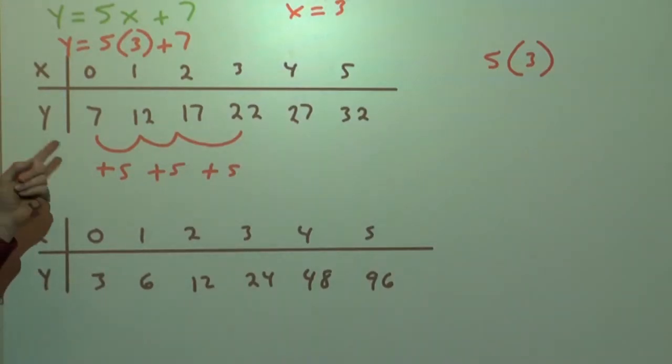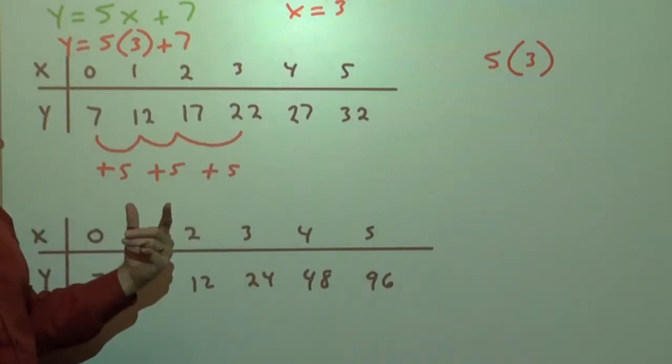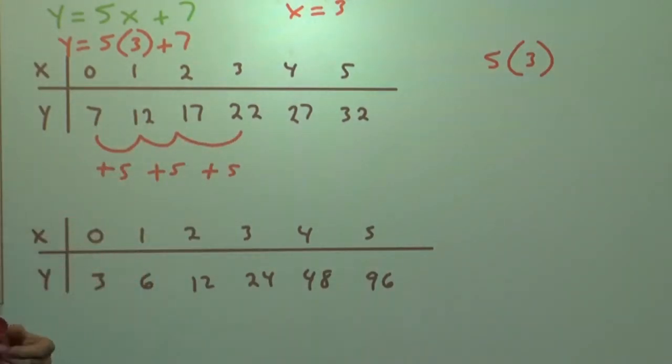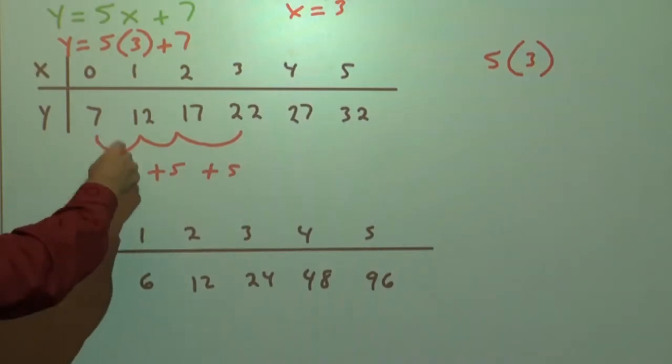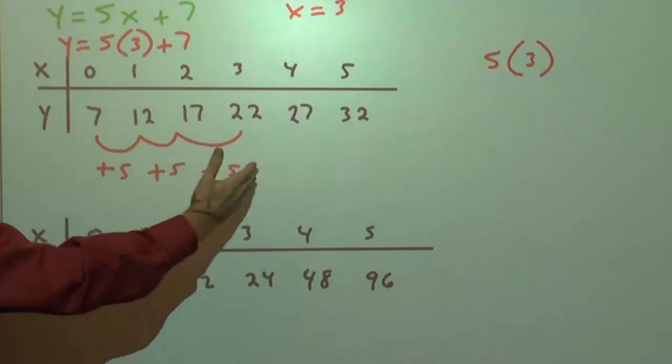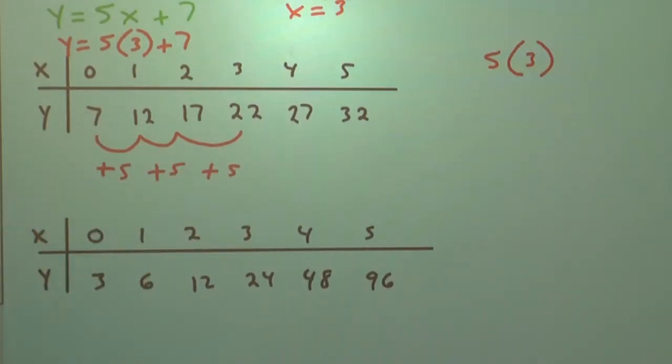This is a linear equation because of that characteristic. We keep adding 5 as y changes. That's also known as an arithmetic progression. When we get to sequences, these would be arithmetic because they keep jumping by 5. That makes it linear.